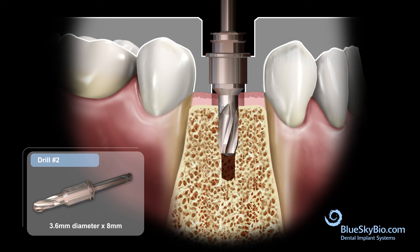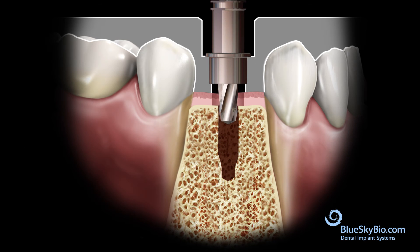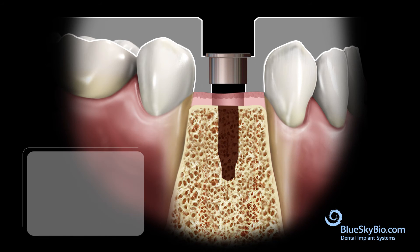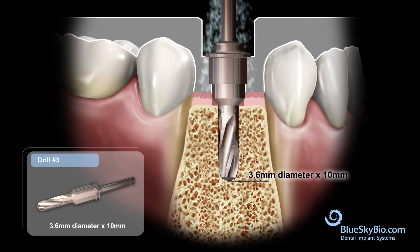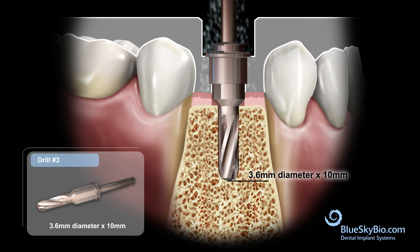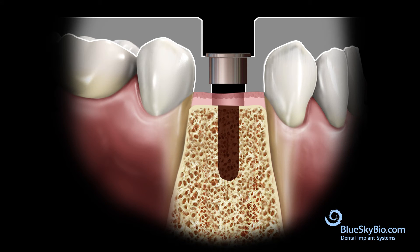Activate the drill and advance until stopped by the master tube. Insert the 10 millimeter long drill with the same diameter without spinning until centered by the master tube, then activate and advance until stopped. If the bone is soft, you can skip the next drill diameter and insert the implant at this point.